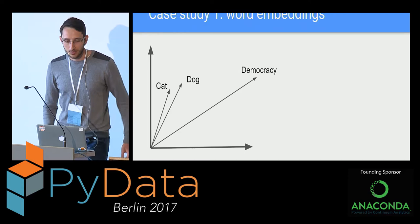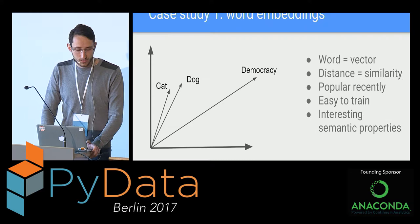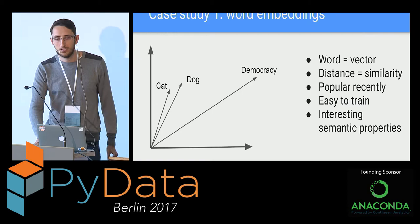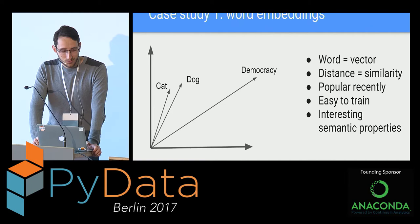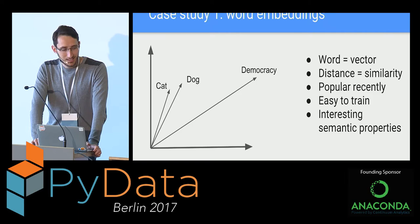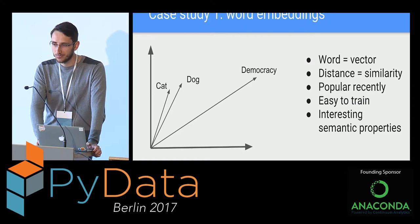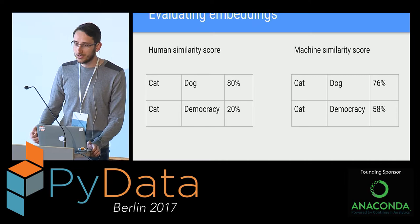First case study: word embeddings. The task is to represent words as vectors. That's a very popular thing to do recently because the distance between those vectors turns out to be very indicative of certain semantic properties. From a purely computational perspective, you can do it completely unsupervised — just download Wikipedia, run some code overnight, and you get this magical representation where cat and dog end up very similar, and democracy ends up very dissimilar. The question I was interested in for my PhD is: how do you know if you've done a good job? There are obviously many ways to build those vectors — which one is better?